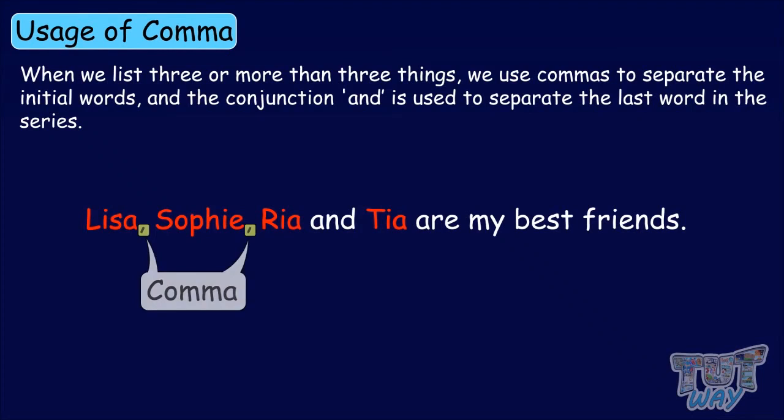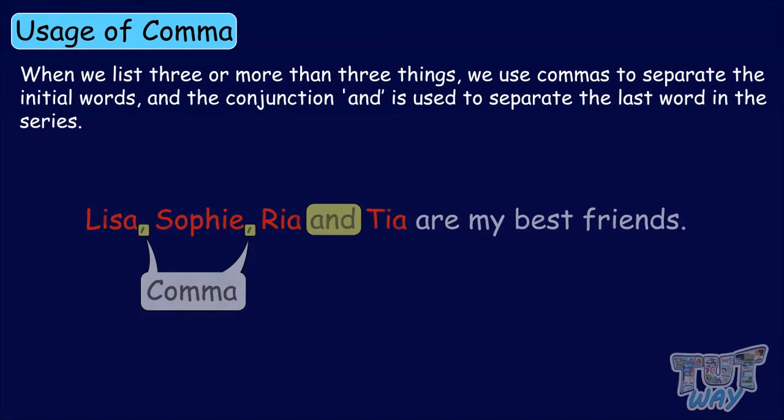When we list three or more than three things, we use commas to separate the initial words, and the conjunction AND is used to separate the last word in the series. For example, cricket, football, tennis, and basketball are some of the most popular games.